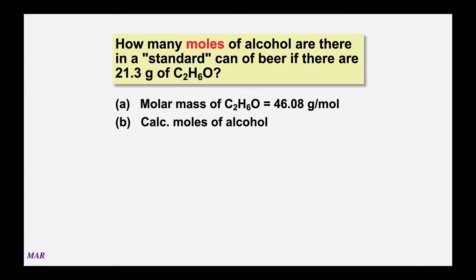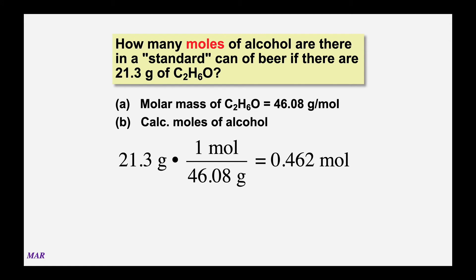Let's figure out how many moles of ethanol (C2H6O) are in a standard can of beer if there are 21.3 grams of ethanol in the beer. We need the molar mass of ethanol, which we saw was 46.08 grams per mole. So: 21.3 grams × (1 mole / 46.08 grams) = 0.462 moles of ethanol to three sig figs.